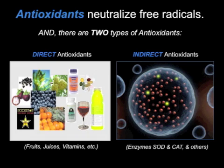Antioxidants do neutralize free radicals, but there are two types. The direct variety comes from your fruits, juices, and vitamins. But there's also an indirect variety — antioxidant catalysts, the enzymes made by your cells. These indirect antioxidant enzymes are produced in your cells as a solution to the free radical damage or oxidative stress load of the person. Enzymes such as SOD or superoxide dismutase, catalase, glutathione, and many others.